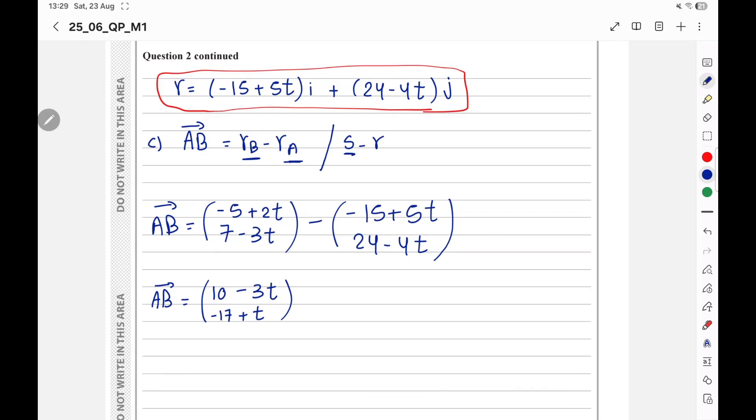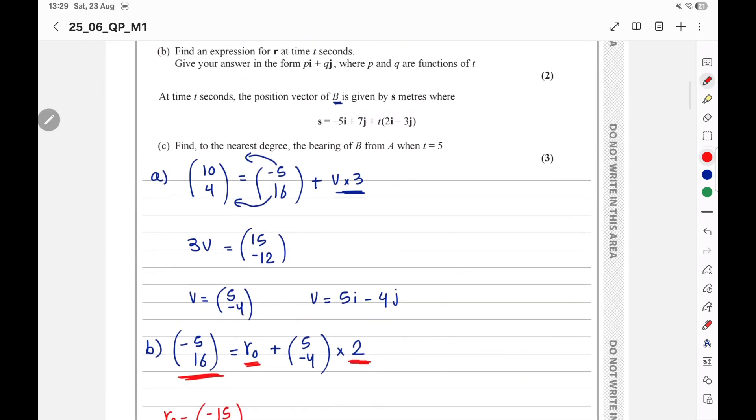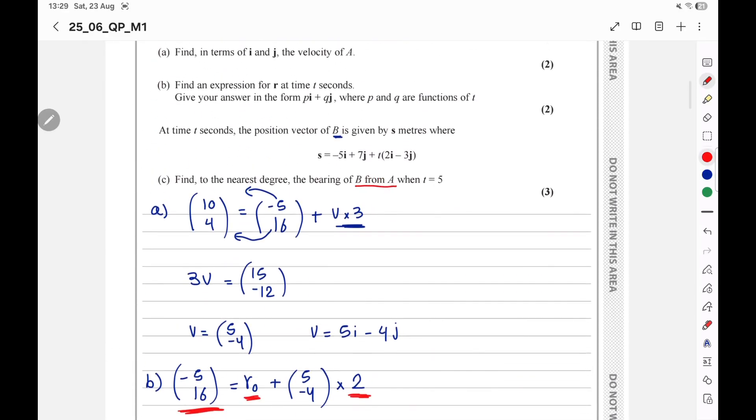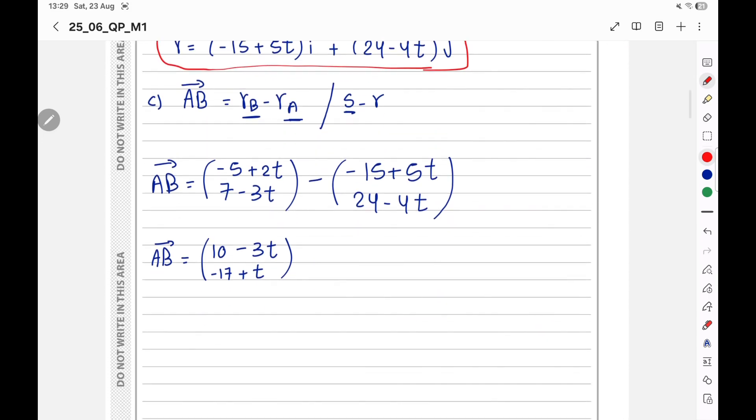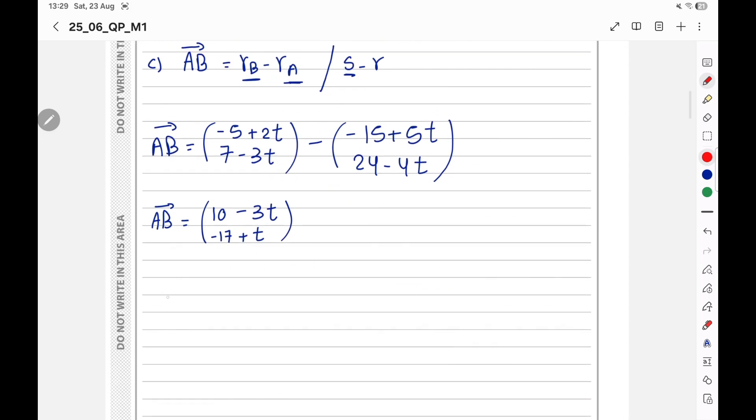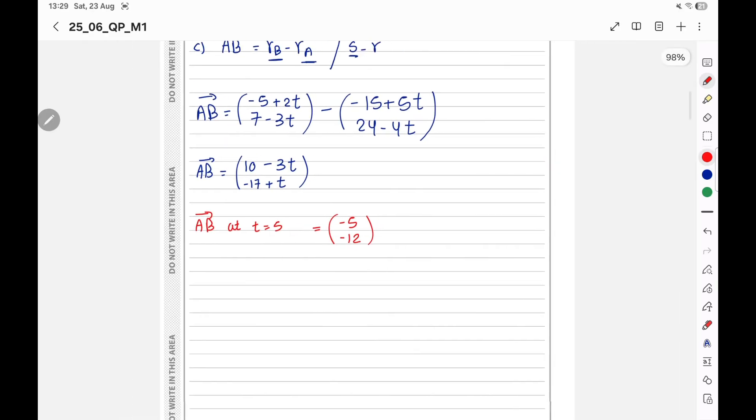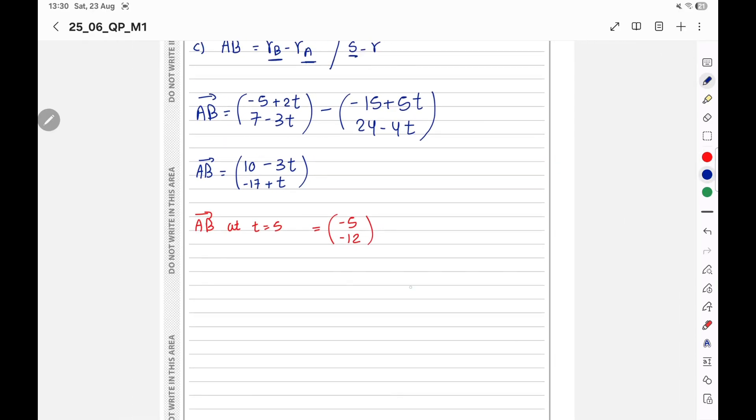Substitute by t equal 5, because he wants the bearing of B from A when t equal 5. 10 minus 3 multiply 5. AB at t equal 5. 10 minus 3 multiply 5, negative 5. Negative 17 plus 5, negative 12. Bearing. I need to calculate the bearing. So I will draw.